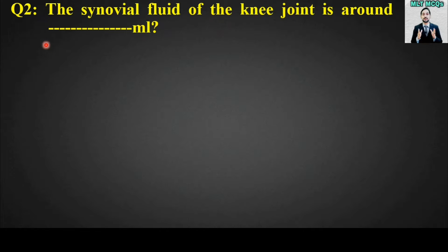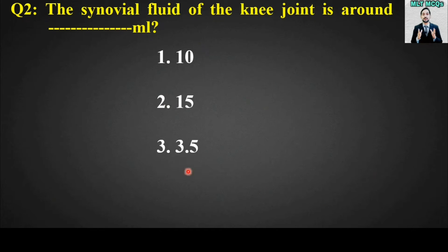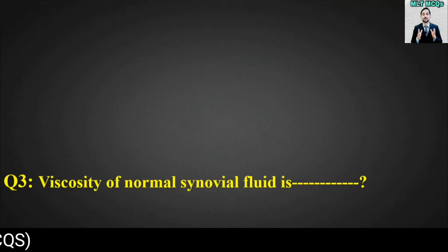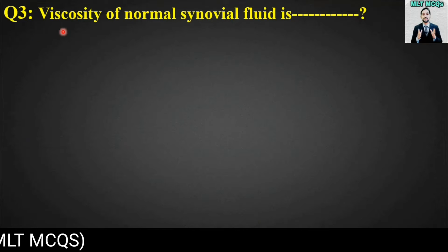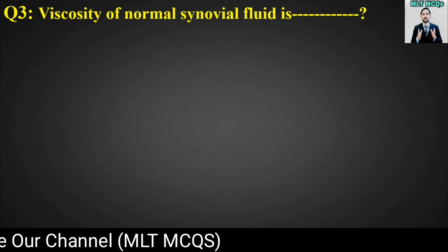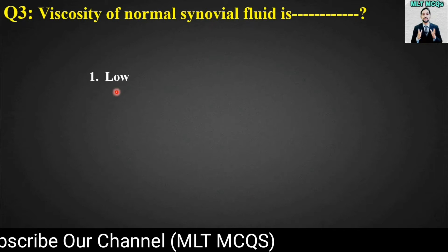MCQ number two: The synovial fluid of the knee joint is around blank ml. Options are: 10, 15, 3.5, or 20. The right answer for this MCQ is option number three — the synovial fluid of the knee joint is around 3.5 ml.